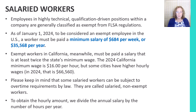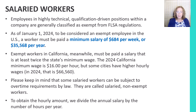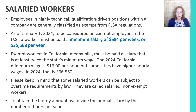Let's start first with salaried workers. Salaried workers are employees employed in highly technical, qualification-driven positions within a company, and they're classified as being exempt from the Fair Labor Standards Regulations, but not everyone can be a salaried worker. As of January 1st, 2024, to be considered an exempt employee in the United States, a worker must be paid a minimum salary of $684 per week or $35,568 per year. In California, exempted workers must be paid a salary that is at least twice the state's minimum wage, meaning salaried workers must earn at least $66,560 per year.